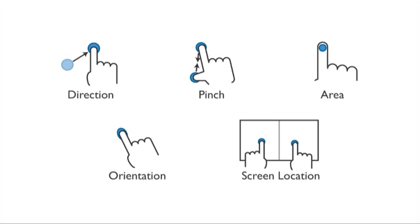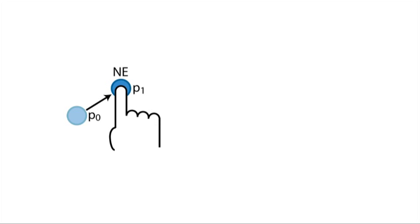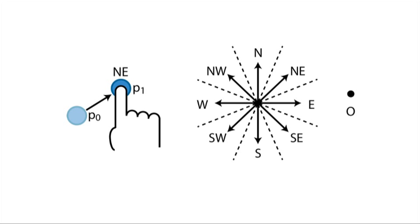Developers can add custom attributes to increase the expressivity and design space of gestures. We present several example attributes that can be added to touch events. The direction of a touch is determined by the last two positions of the touch, which are binned into the eight compass directions.